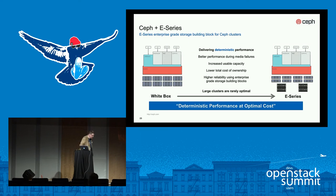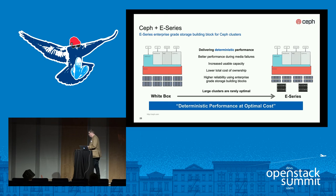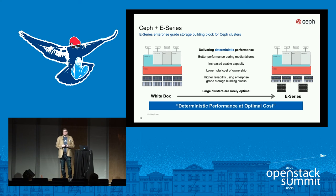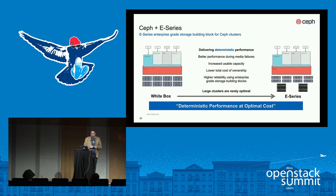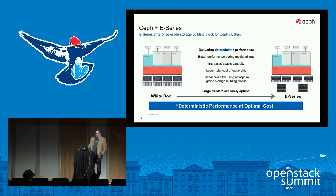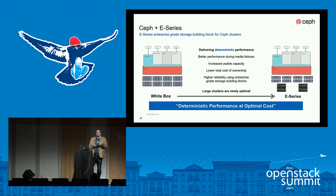At the end of the day, by using enterprise storage with Ceph we can deliver deterministic performance and optimize price — it is not significantly more expensive and in some cases over time is less expensive. We can scale compute and storage independently, and we are more efficient in scaling capacity because we have two replicas with RAID instead of three raw replicas.